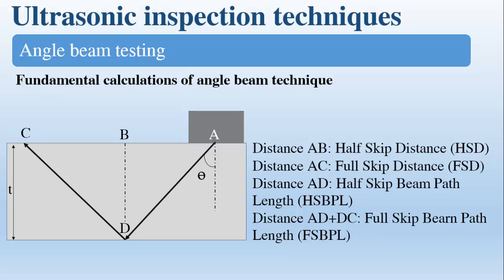The distance AB is called the half skip distance. The distance AC is called the full skip distance.